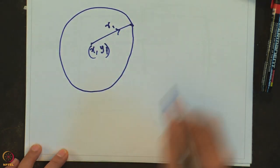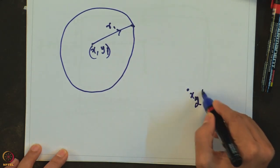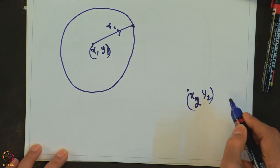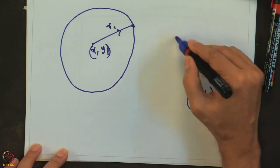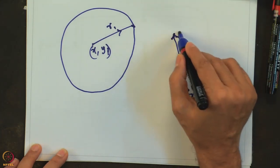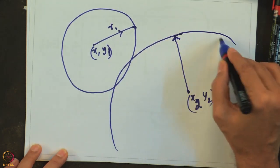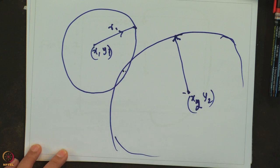Let us say this is x2, y2, the point x2, y2 and let us say this is the radius, this distance is the radius. So then the disk will look something like this and if the radius is large enough then there is an intersection over here.